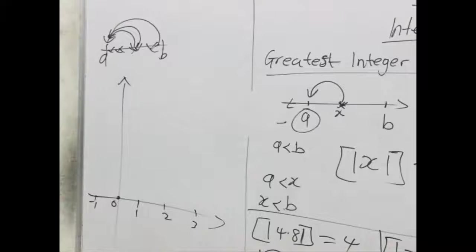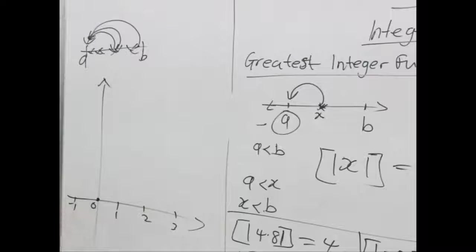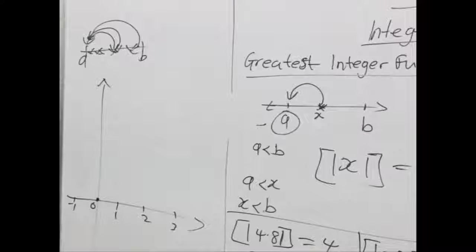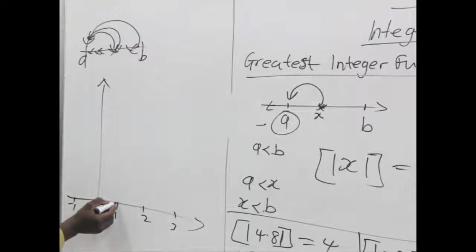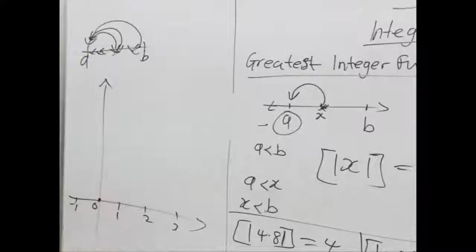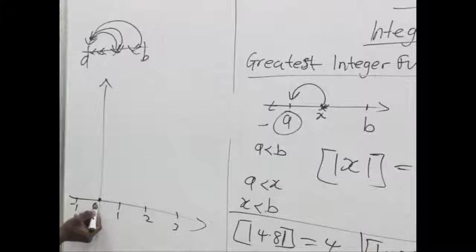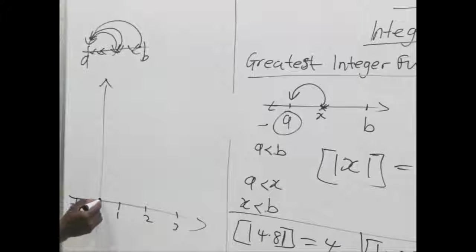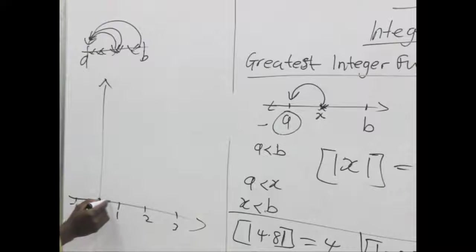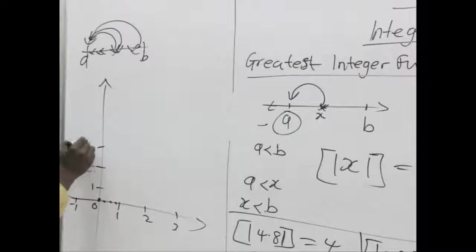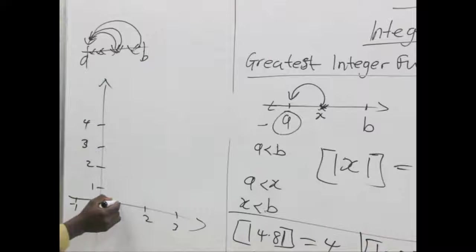If we pick 0, 0 is on its own, it's an integer. So 0 will still be at 0. But when we pick 1, 1 is also an integer. So 1 is still 1. But any number between 0 and 1, we refer all of them to 0. So from here, if a number is here, it will still be 0, it will still be 0. But when it is exactly on 1, 1 is an integer.